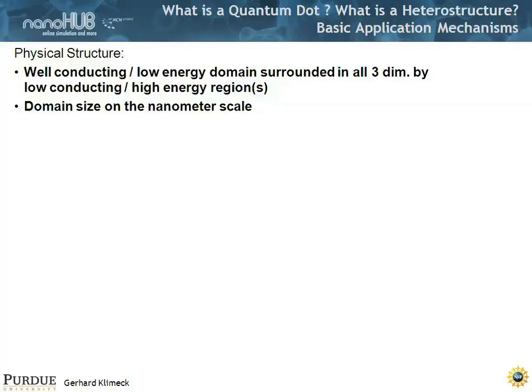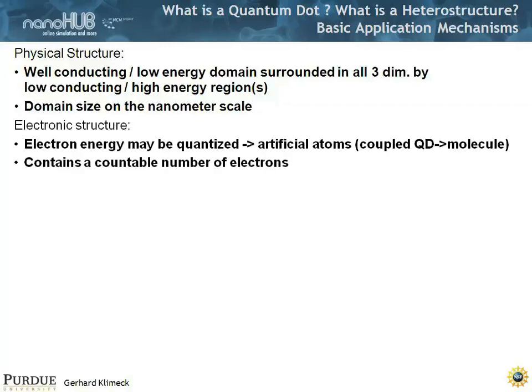The domain size needs to be roughly on the order of nanometers, which is roughly the wavelength of electrons. And secondly, you need to look at the electronic structure where the electron energy may be quantized. You end up with an artificial atom, and if you have coupled quantum dots you might have an artificial molecule.